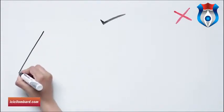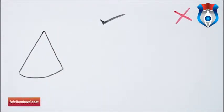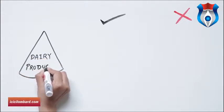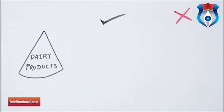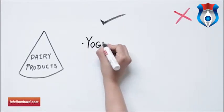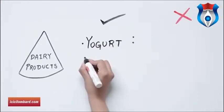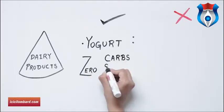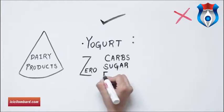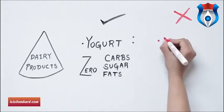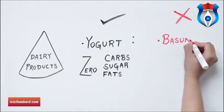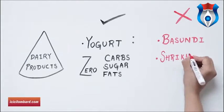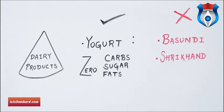India has the unique advantage of making dairy products a part of the regular eating cycle. Have a cup of yogurt with your meal — yogurt has zero carbs, zero sugar and zero trans fats, making it an ideal daily product. For those with a sweet tooth, add a little sugar to your yogurt instead of having basundi and shrikhand, which are very high in sugar and calorie content.